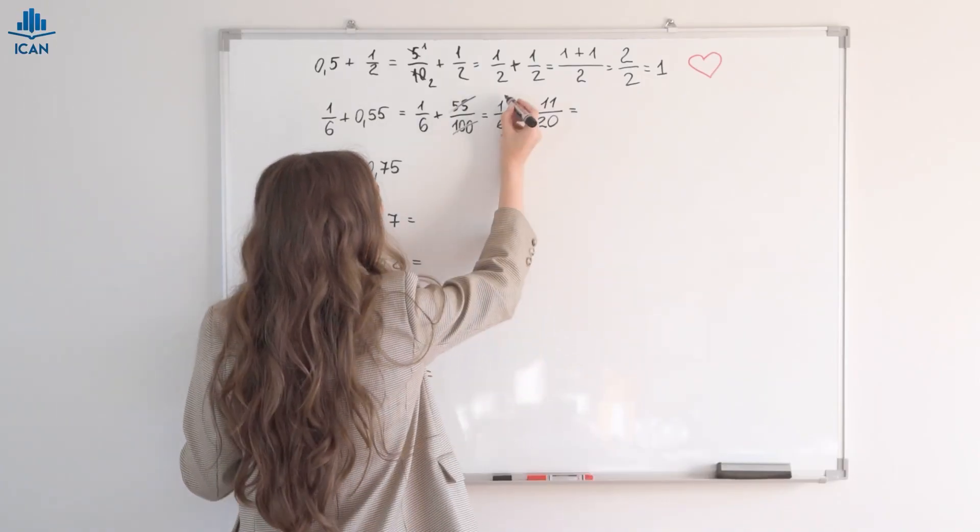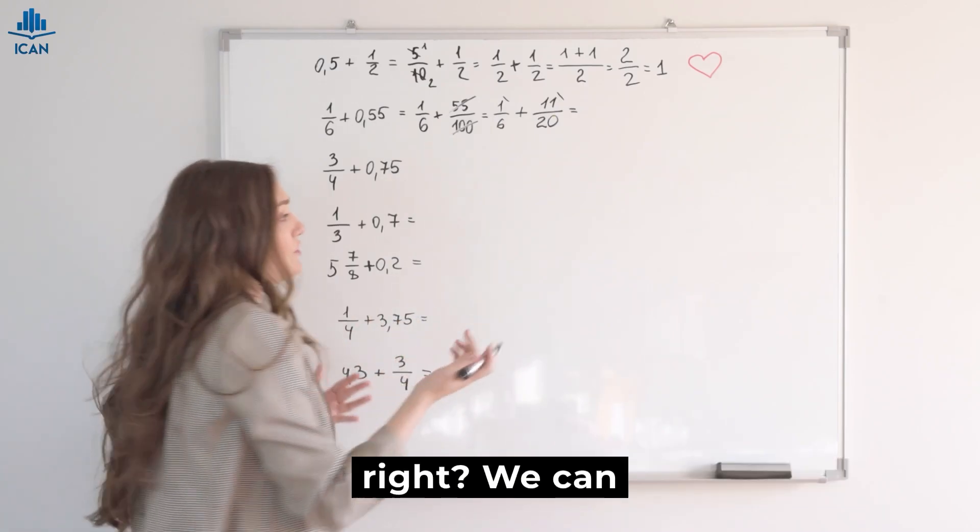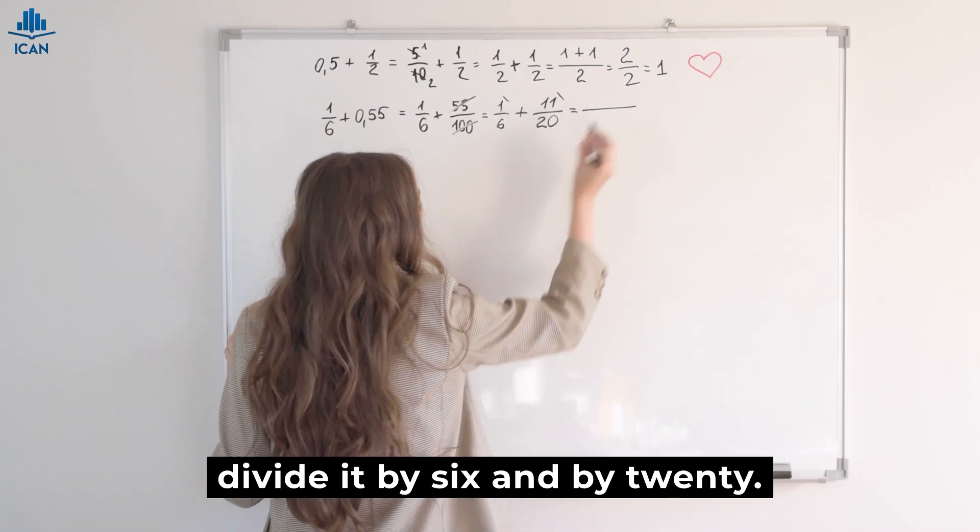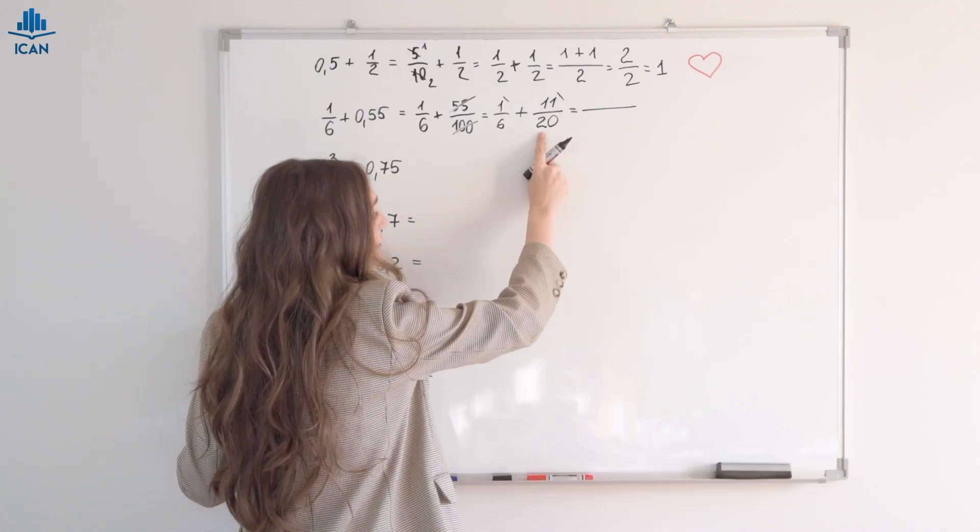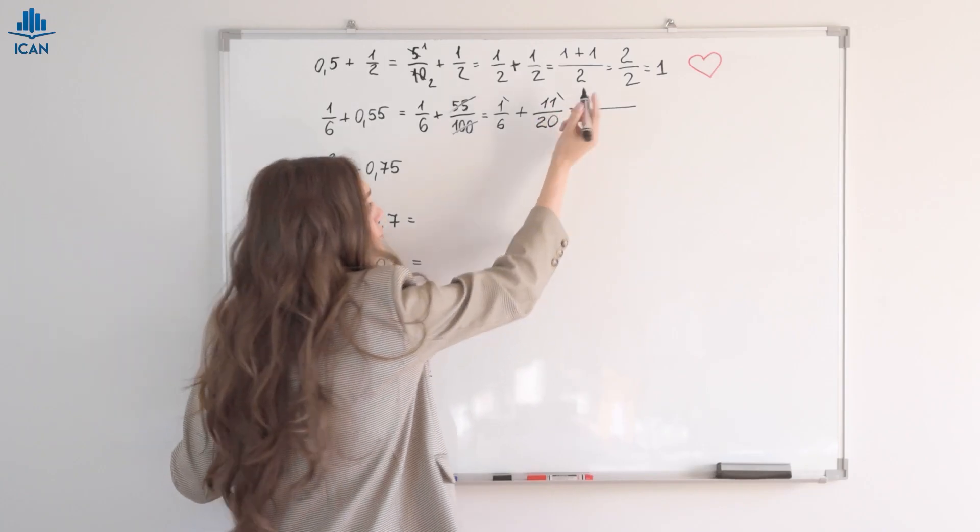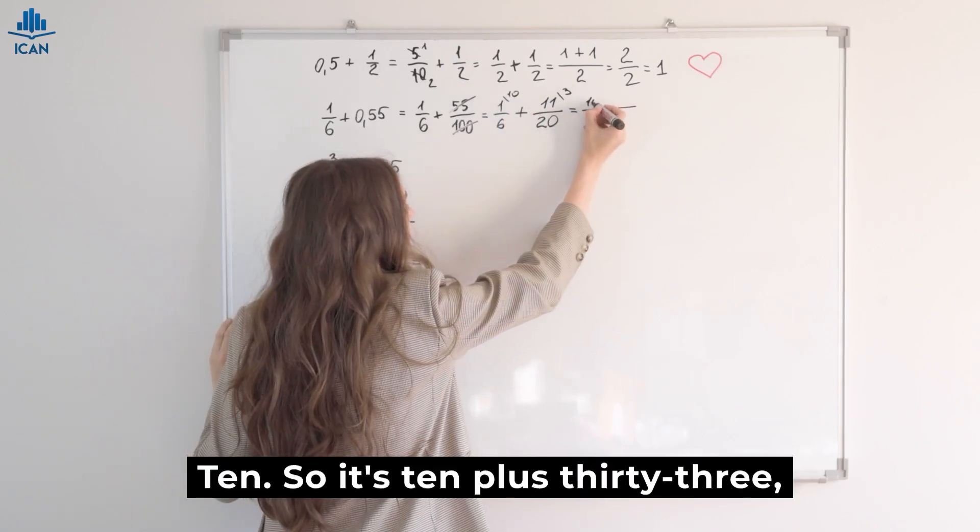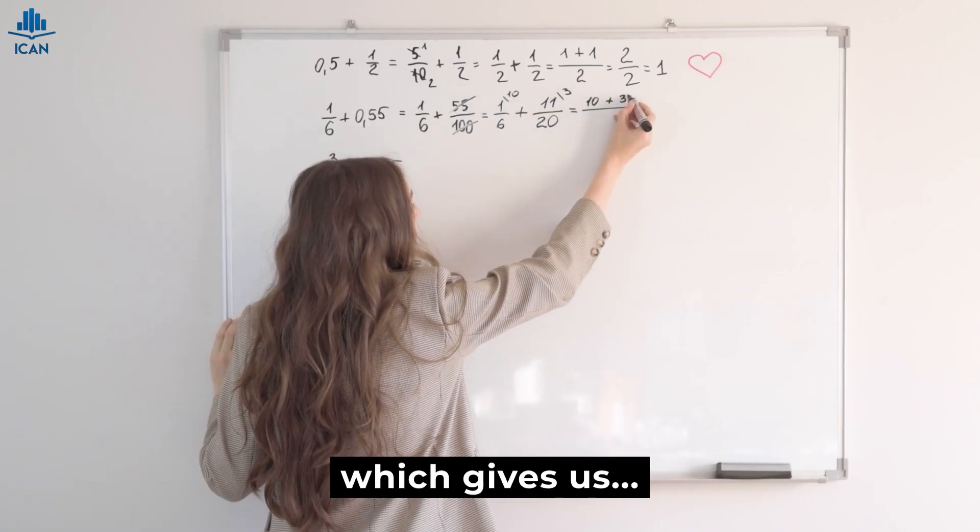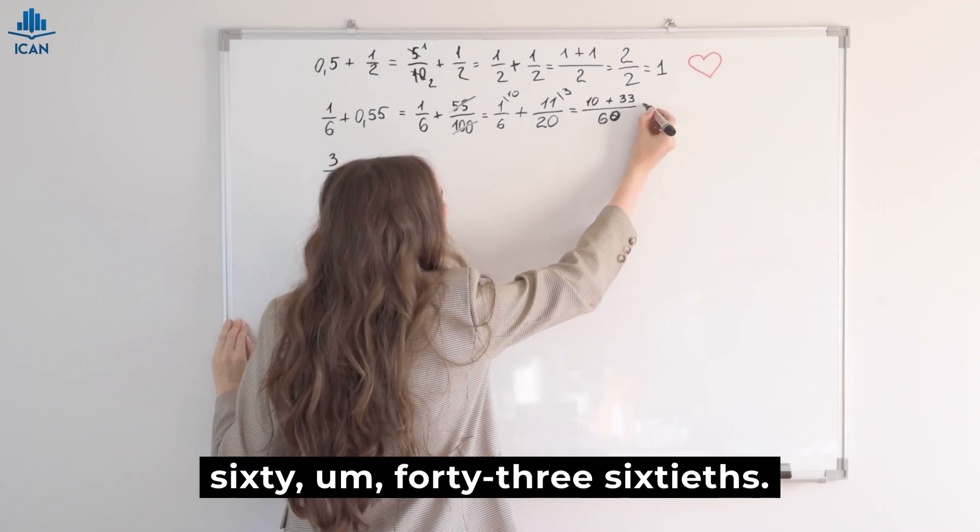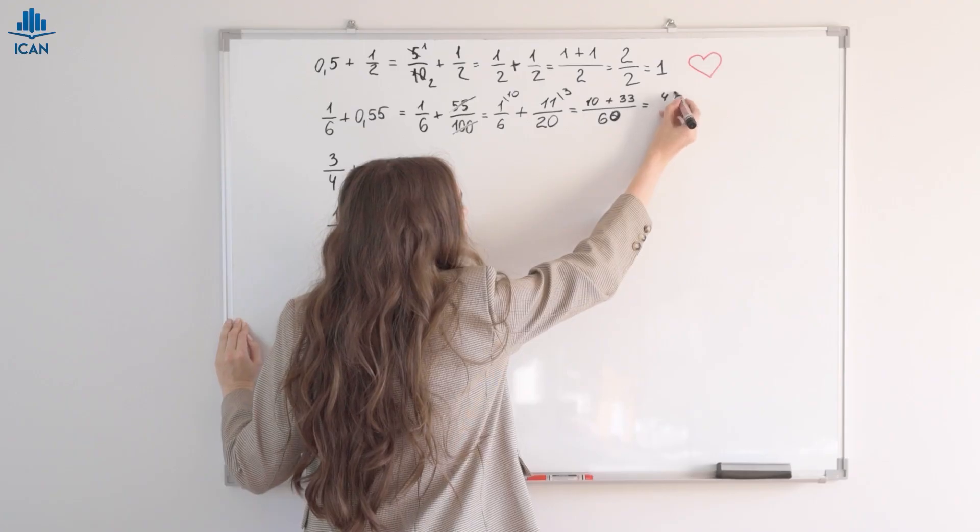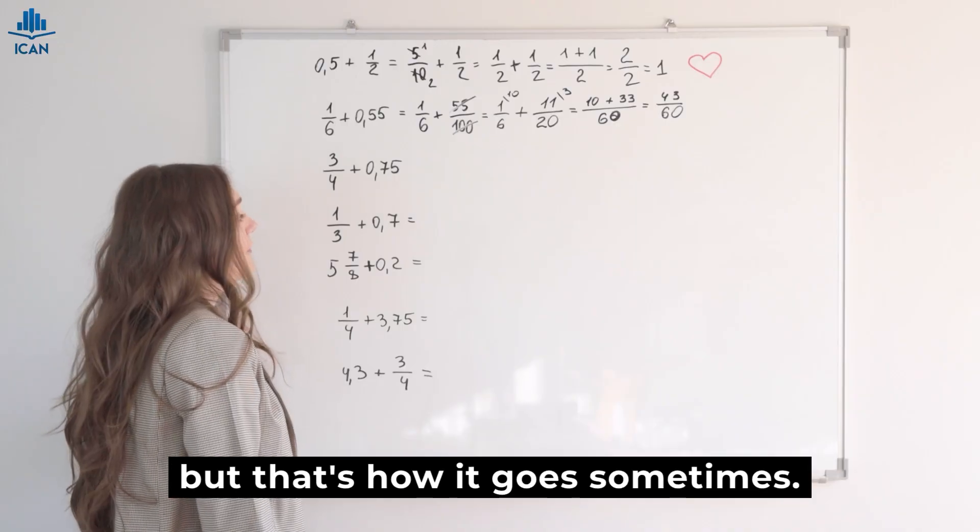How do we do that? Sixty will be our common denominator, right? We can divide it by six and by twenty. So, sixty divided by twenty is how many? Three. And sixty divided by six, how many is that? Ten. So, it's ten plus thirty-three, which gives us forty-three sixtieths. It's a bit of an awkward fraction, but that's how it goes sometimes.